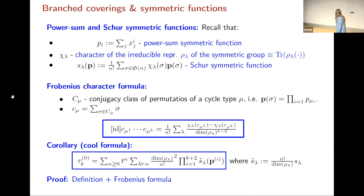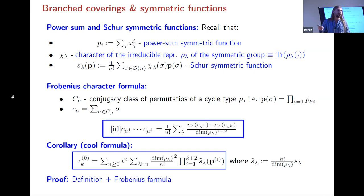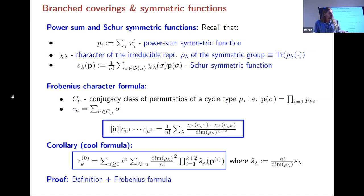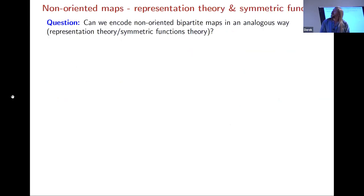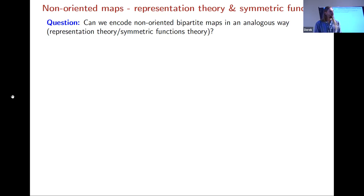If we denote C_μ as the conjugacy class of permutations of cycle type μ, then the number of factorizations of identity as a product of permutations with fixed conjugacy classes can be computed using the Frobenius character formula — you sum over all irreducible representations and compute the characters. Using this formula, we get a very nice expression for the τ function in terms of Schur symmetric functions — a partition function of a product of Schur symmetric functions, up to normalization.